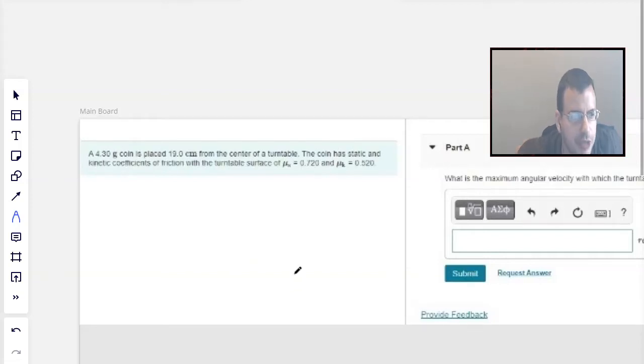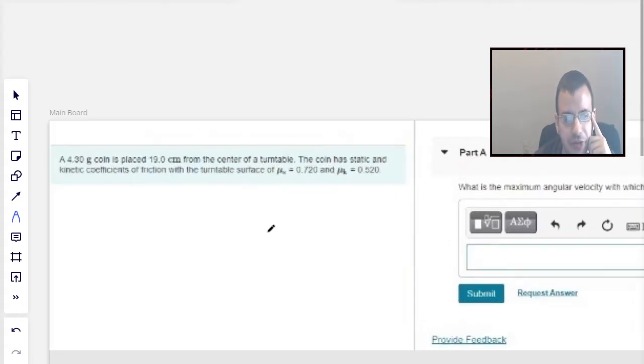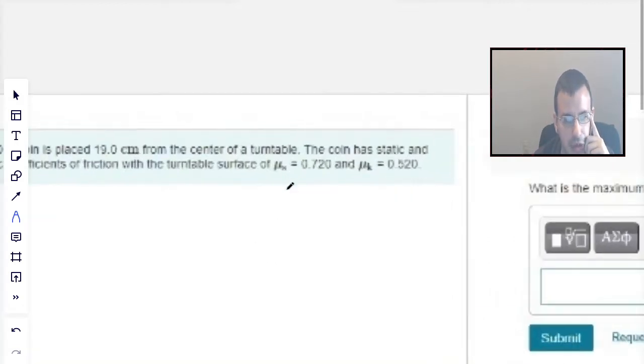A 4.3 gram coin is placed 19 centimeters from the center of a turntable. The coin has static and kinetic coefficients of friction with the turntable surface: µs = 0.72 and µk = 0.52.